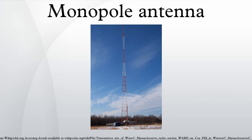A monopole antenna is a class of radio antenna consisting of a straight rod-shaped conductor, often mounted perpendicularly over some type of conductive surface called a ground plane. The driving signal from the transmitter is applied — or for receiving antennas the output signal to the receiver is taken — between the lower end of the monopole and the ground plane. One side of the antenna feedline is attached to the lower end of the monopole, and the other side is attached to the ground plane, which is often the Earth. This contrasts with a dipole antenna, which consists of two identical rod conductors, with the signal from the transmitter applied between the two halves of the antenna.